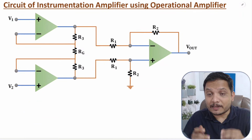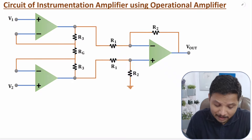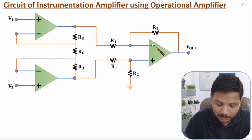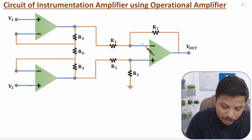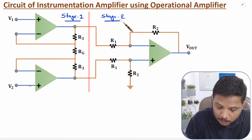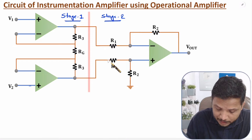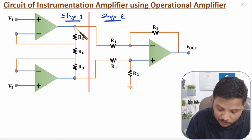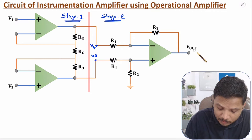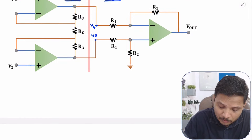Here you can observe the circuit diagram of an instrumentation amplifier using operational amplifiers, where V1 and V2 are inputs and the output Vout is taken from the final operational amplifier. If you carefully observe this circuit, there are two stages: Stage 1 and Stage 2. For Stage 2, the inputs coming in are labeled VA at one terminal and VB at the other terminal, and we need to find Vout because of VA and VB. This op-amp has a differential configuration with negative feedback.